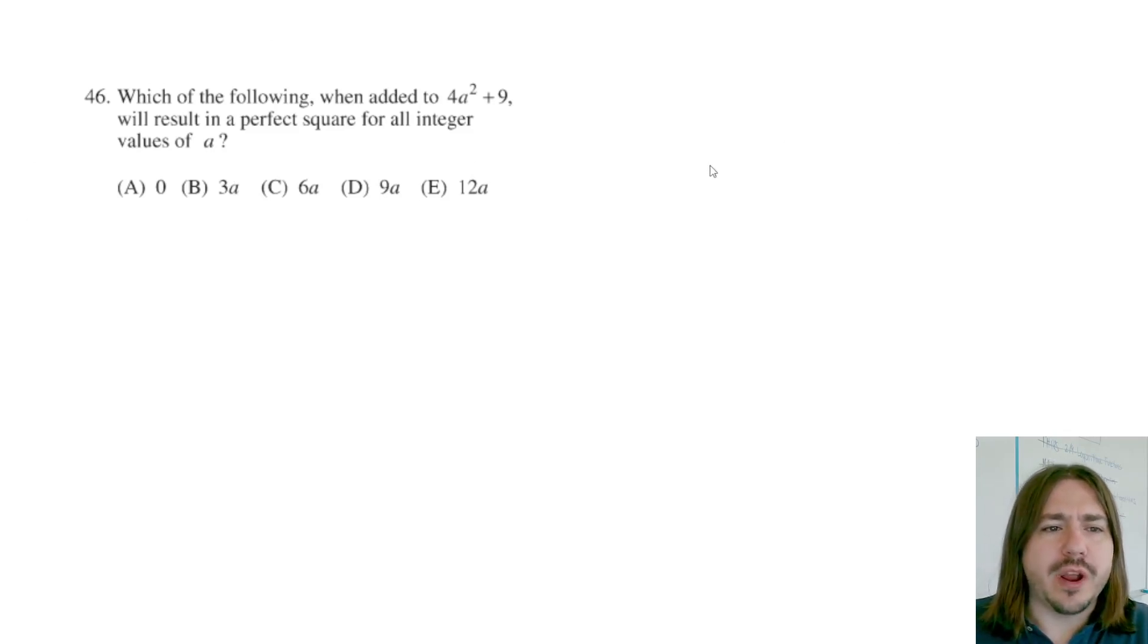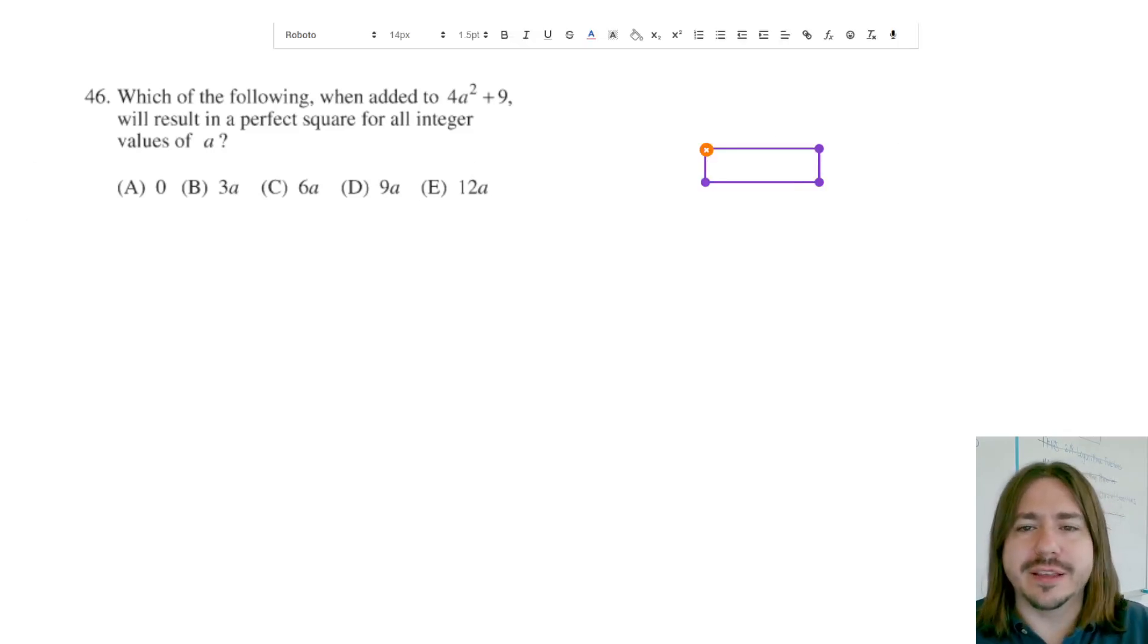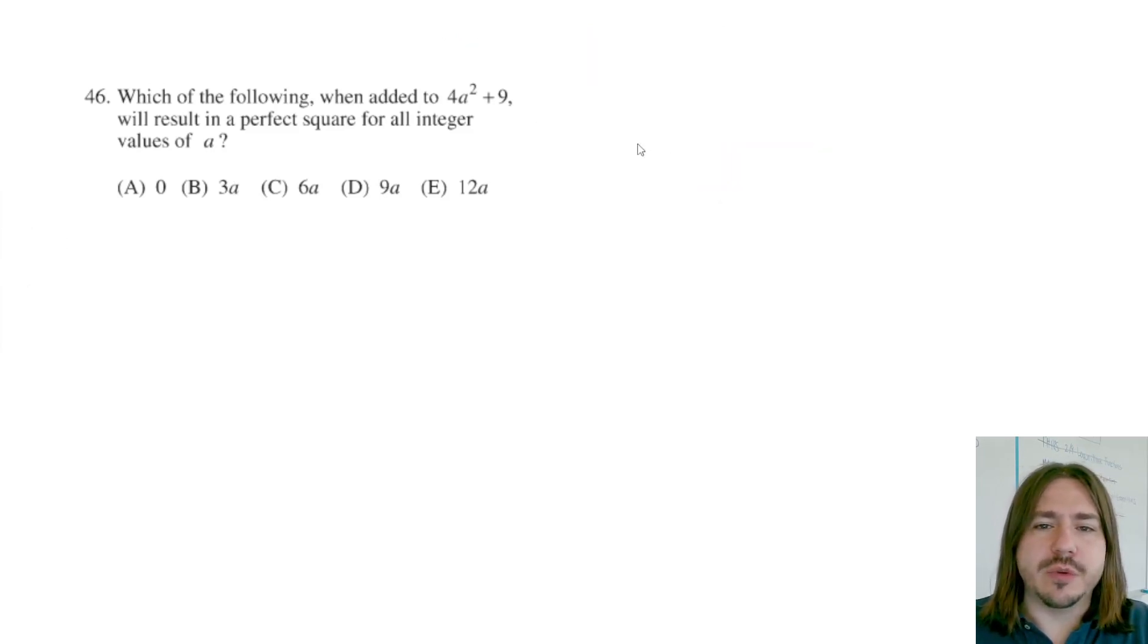So we want to think about what a perfect square looks like as a quadratic. Typically when you've got a perfect square, what it's really saying is that we can write this perfect square quadratic like this where basically it's something squared.